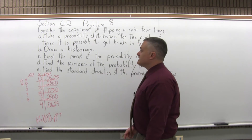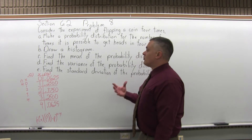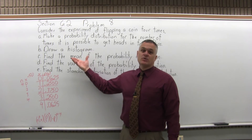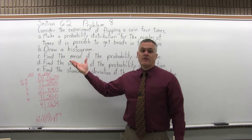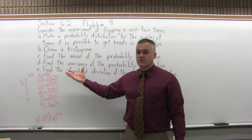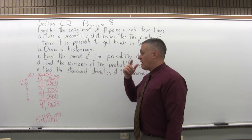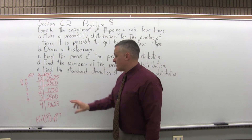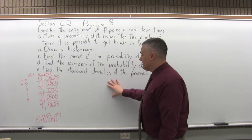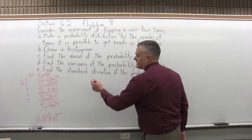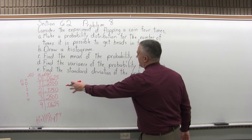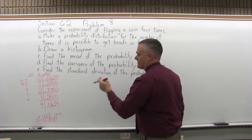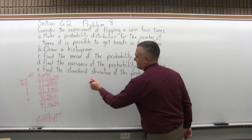B says draw the histogram. So again, for a histogram we're looking for essentially what looks like a bar graph. The bars have to be vertical and they have to touch. I'm going to leave myself a little bit of room, because I'm going to want to come back next to that when I do Part C — just to think ahead for a minute.